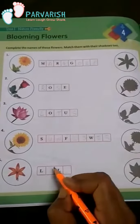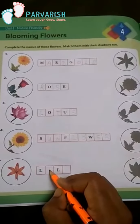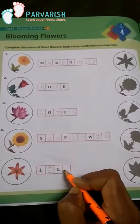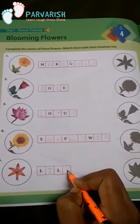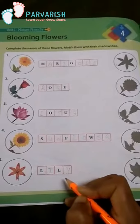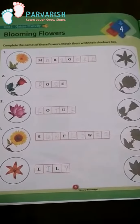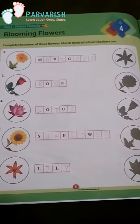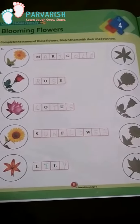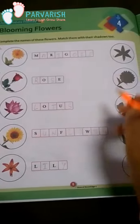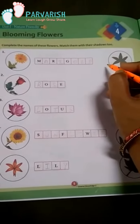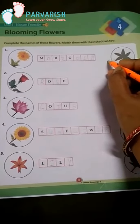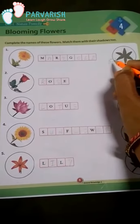Which flower here? Lily. L-I-L-Y. Now we match their shadow. Number 5 — Lily.